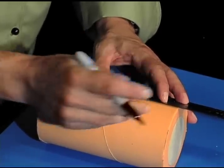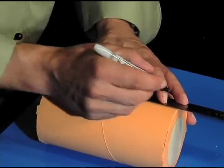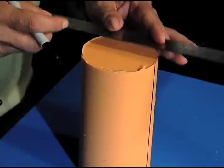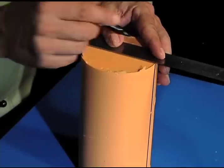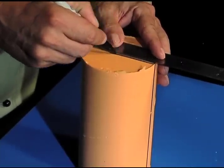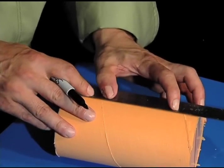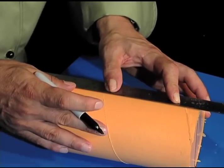Using a ruler and marker, draw a line directly down the center of one side of the mold. Proceed drawing a line across the top and down the center of the other side of the mold. Accuracy at this stage is very important, so take your time to get it right.